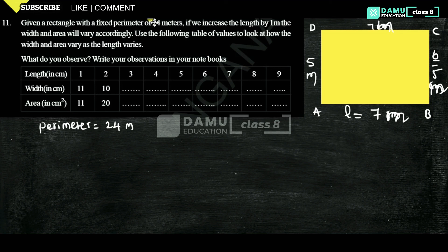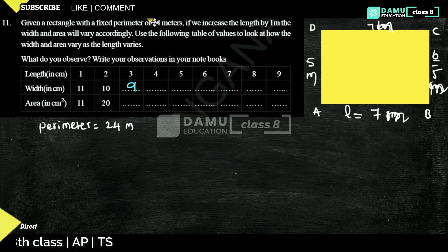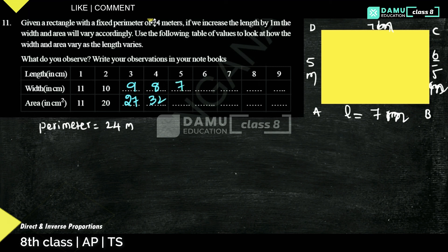Starting the table: when length is 1, width is 11, area is 11. Length 2, width 10, area 20. Length 3, width 9, area 27. Length 4, width 8, area 32. Length 5, width 7, area 35. Length 6, width 6, area 36. Length 7, width 5, area 35. Length 8, width 4, area 32. Length 9, width 3, area 27.